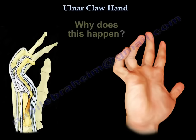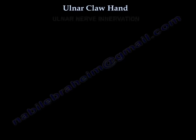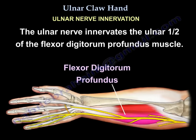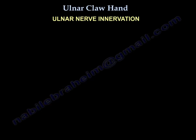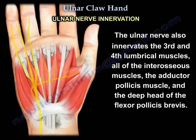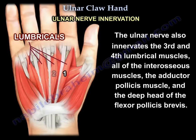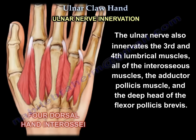So why does this happen? Let's review the ulnar nerve innervation. The ulnar nerve innervates the ulnar half of the flexor digitorum profundus muscle. It also innervates the third and fourth lumbrical muscles and all of the interossei muscles.